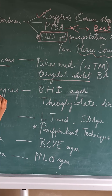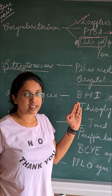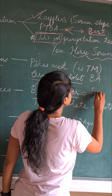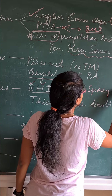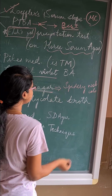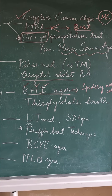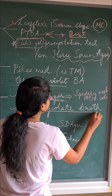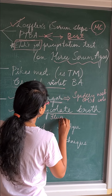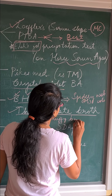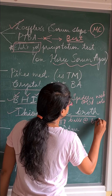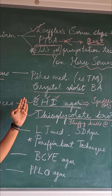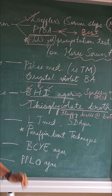Actinomyces is grown on BHI agar — brain heart infusion agar. On this medium it shows spidery web colonies, also known as breadcrumb appearance. On TG broth — thioglycollate broth — there will be fluffy ball deposition at the bottom of the tube. So for Actinomyces, the two main media are BHI agar and TG broth.